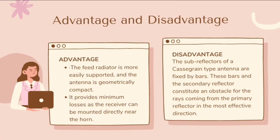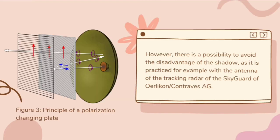The advantages are that the fed radiator is more easily supported and the antenna is geometrically compact. It also provides minimum losses as the receiver can be mounted directly near the horn. The disadvantage is that the subreflectors of a Cassegrain antenna are fixed by bars. These bars and the secondary reflector constitute an obstacle for rays coming from the primary reflector in the most effective direction. However, there is a possibility to avoid the disadvantage of the shadow, as practiced, for example, with the antenna of the tracking radar of the Sky Guard or of Oerlikon Contraves AG.